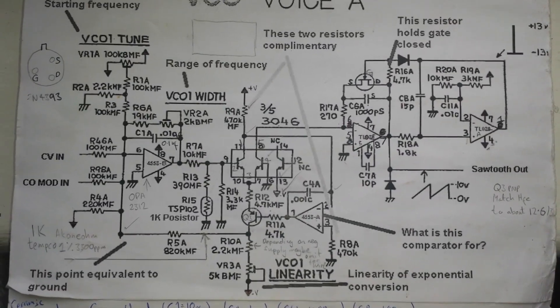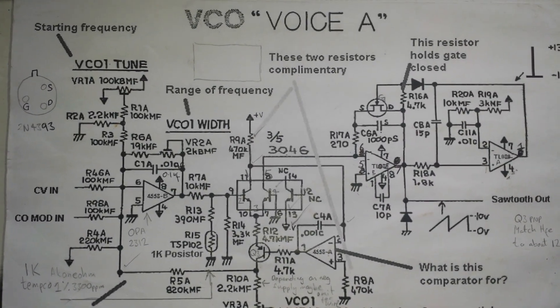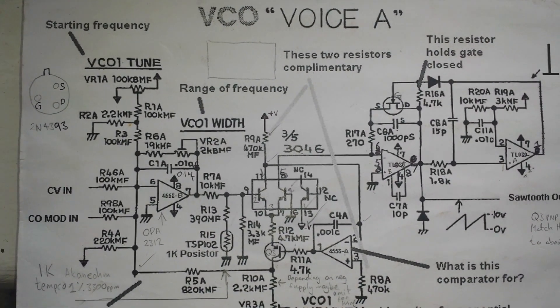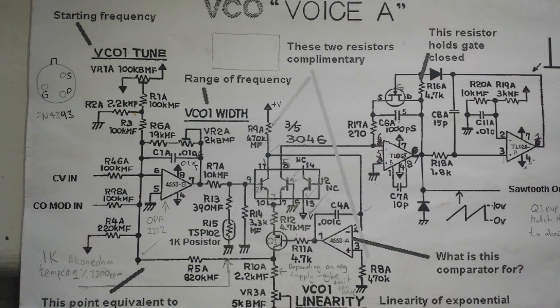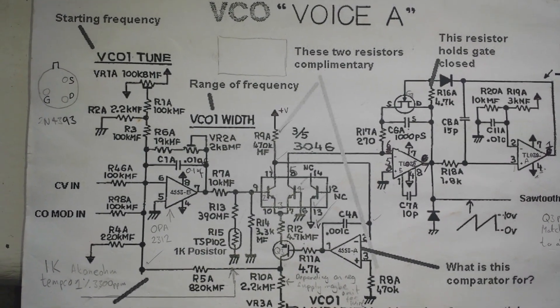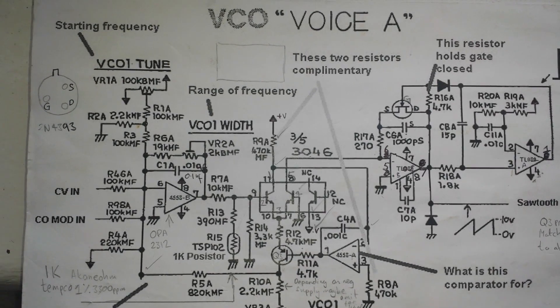So basically what that will do is give you one volt per each musical octave. So say for instance we are tuning by the key of C. C0 can be 0 volts, 1 volt would be C2 and going upwards.